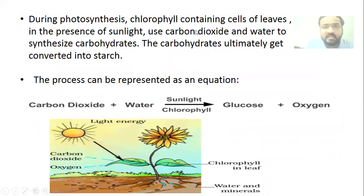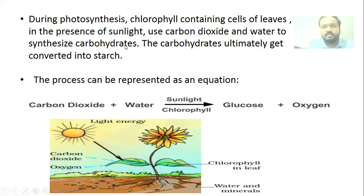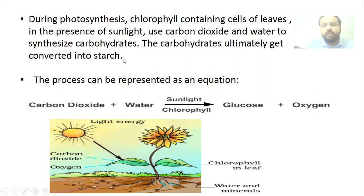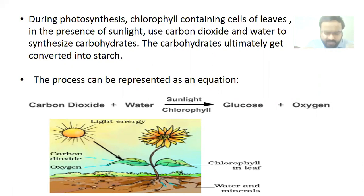During photosynthesis, chlorophyll-containing cells of leaves, in the presence of sunlight, use carbon dioxide and water to synthesize carbohydrates. At the end of photosynthesis, the food formed is in the form of carbohydrates, which get ultimately converted into starch. Plants store their food in the form of starch and convert it back into carbohydrates when energy is required.